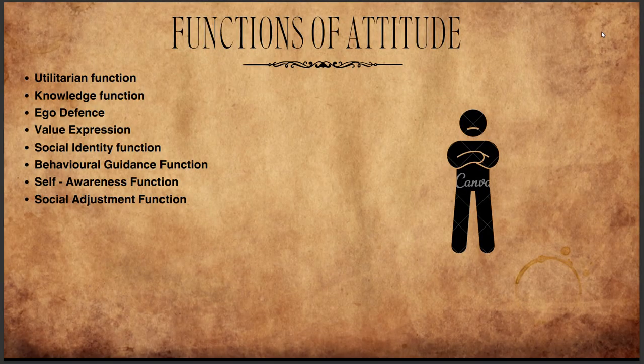Now let's look into the functions of attitude. First is the utilitarian function — it helps individuals maximize rewards and minimize punishment. Awards such as Bharat Ratna, Padma Bhushan, and Padma Vibhushan are bestowed by the government to develop a positive attitude in citizens towards their respective work and social service. That is the utilitarian function.